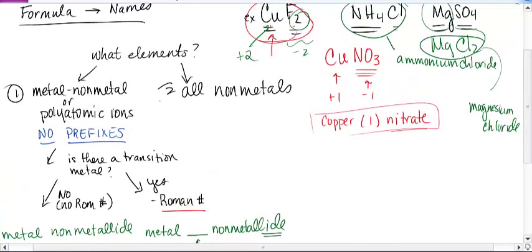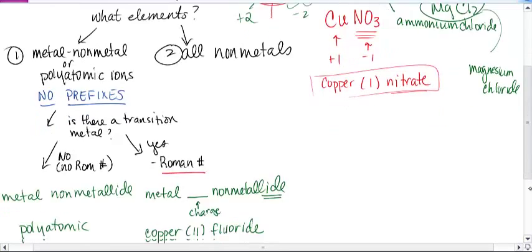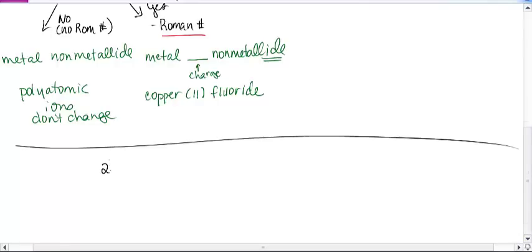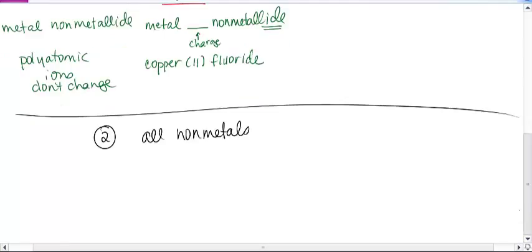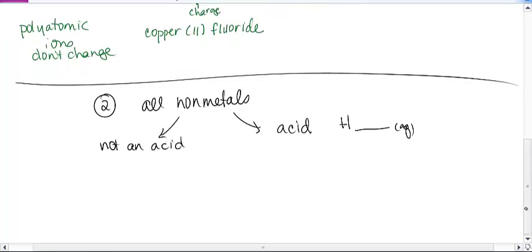All right. Back to the other. If the elements are all non-metals, there's two possibilities. It could be an acid, in which case you recognize it because it starts with H and typically has AQ. The key thing here is that if it's all non-metals and it's not an acid, how do I know? Because it doesn't start with H and end with AQ. When we write the names, these have to use prefixes.